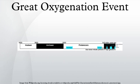The Great Oxygenation Event, also called the Oxygen Catastrophe, Oxygen Crisis, Oxygen Revolution, or Great Oxidation, was the biologically induced appearance of dioxygen in Earth's atmosphere. Geological, isotopic, and chemical evidence suggest that this major environmental change happened around 2.3 billion years ago.